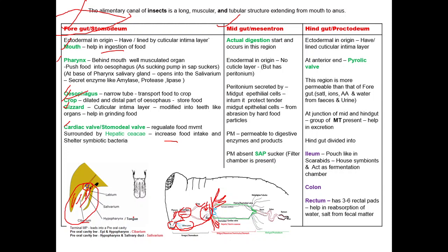Now come to midgut or mesenteron. Actual digestion starts and occurs in the midgut region. The midgut is endodermal in origin, that's why it does not possess the cuticular intima layer.